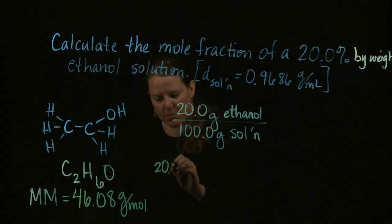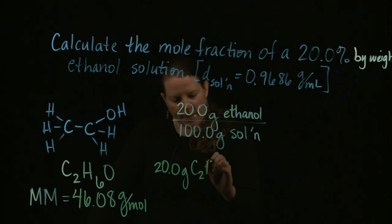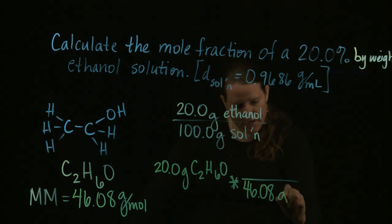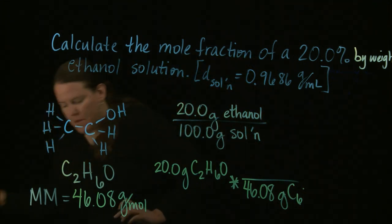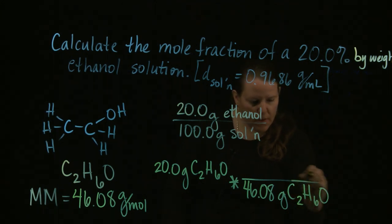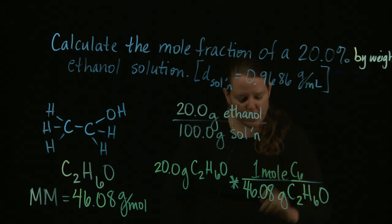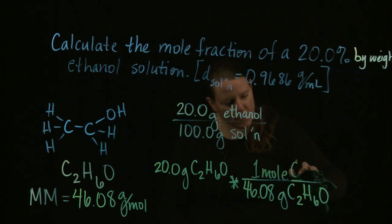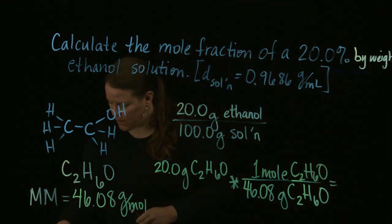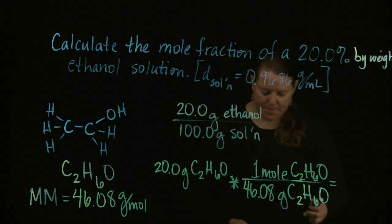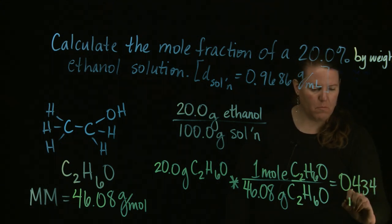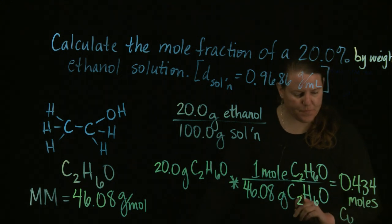So I know that every time I have 20 grams of ethanol, if I just use the molar mass here and put that molar mass, the number I just calculated on the bottom, because that's the number of grams in one mole. And I'm going to divide that out. And I get a number like 0.434 moles of ethanol.